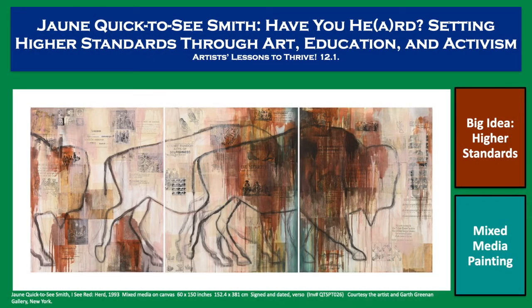Jean Quick-to-See Smith is an acclaimed contemporary artist, educator, activist, and member of the Confederated Salish, Kootenai, and Pend d'Oreilles Nation. Her mixed media painting I See Red: Herd illustrates the importance of bison and Native American history and addresses complex issues of race, identity, and stewardship. The painting's background contains repetitive images of collage bison that form new herds, replacing just a small fraction of the millions of bison that once roamed North America's grasslands. This Artist Lessons to Thrive feature describes how Smith has dedicated a lifetime of efforts through art, education, and activism to urge society to come together as a team to learn from past mistakes so that we can collectively set higher standards as good humanitarians and stewards of the earth.